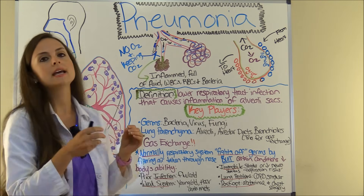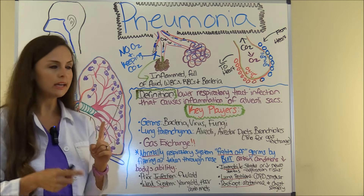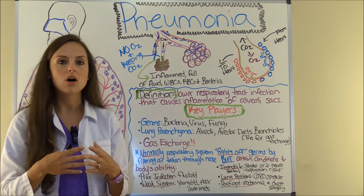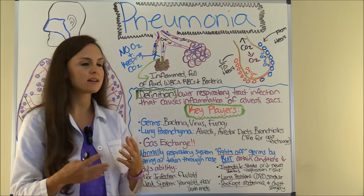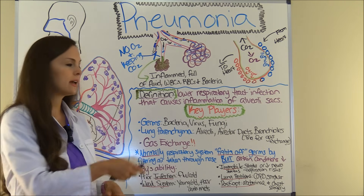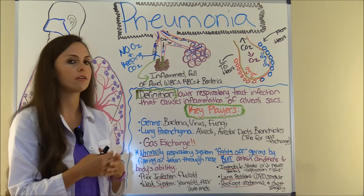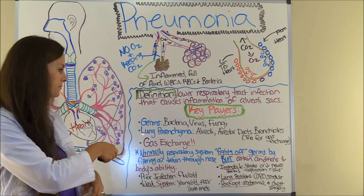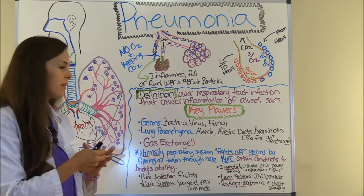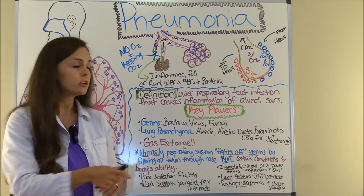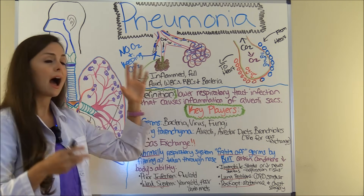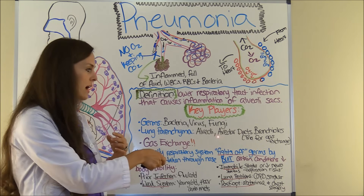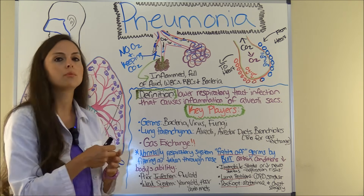The key players in pneumonia: one key player are germs. This causes inflammation of that sac, and this germ can be a bacteria, a virus, or a fungi or fungus — very rare, but it can happen. Also, the big thing that plays a part in pneumonia is your lung parenchyma, which I like to call the trio for gas exchange: your alveoli, your alveolar ducts, and your bronchioles.